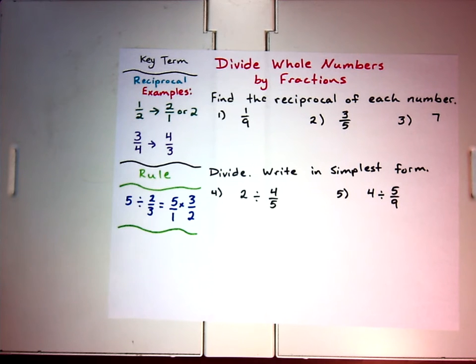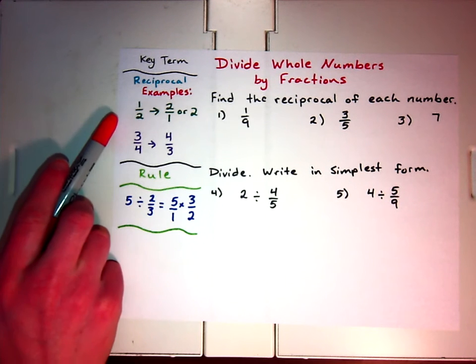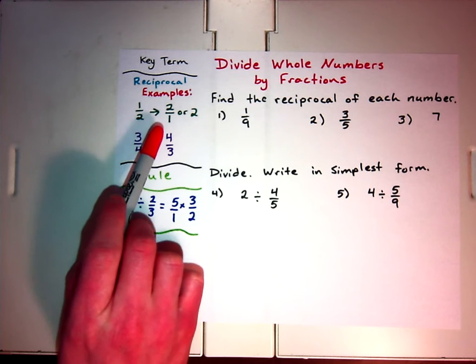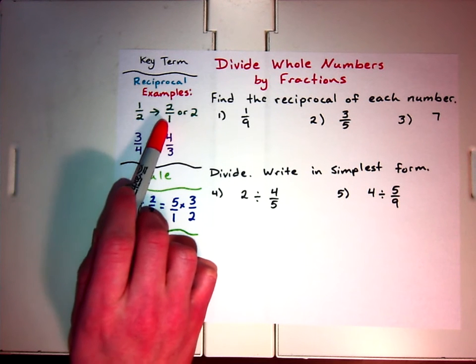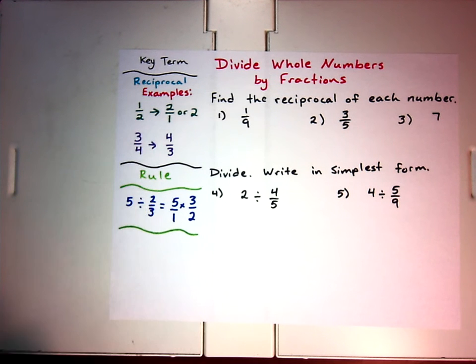One key term that we need to make sure we understand is the term reciprocal. A reciprocal is simply a flipped fraction where we put the denominator in the numerator and the numerator in the denominator. We see a couple examples here where 1 over 2, the reciprocal for that is 2 over 1. Our denominator moved to our numerator and the numerator moved to our denominator.